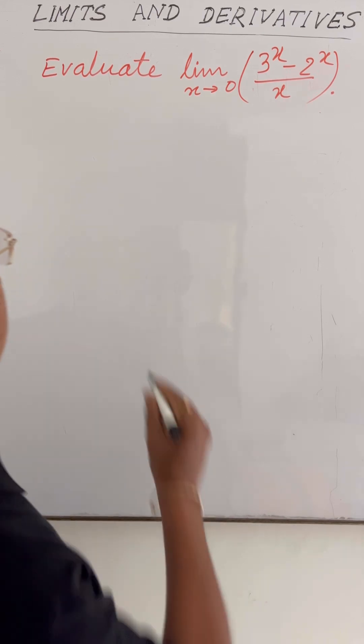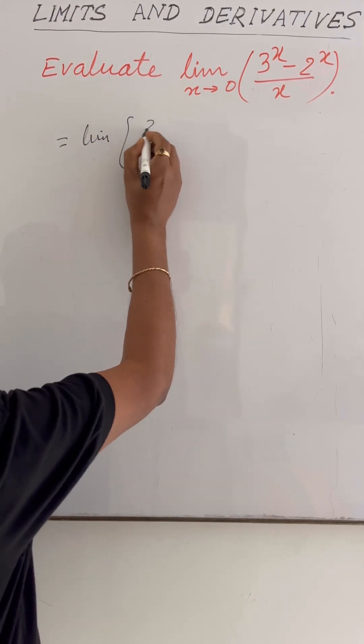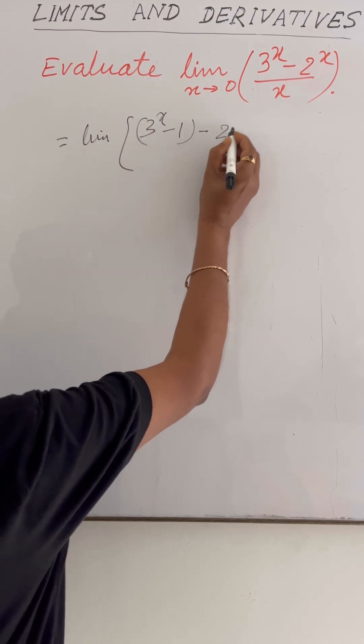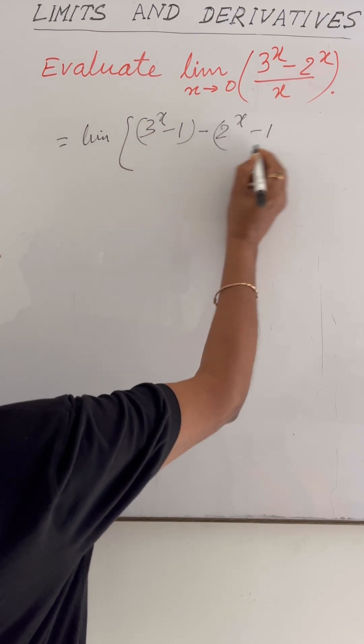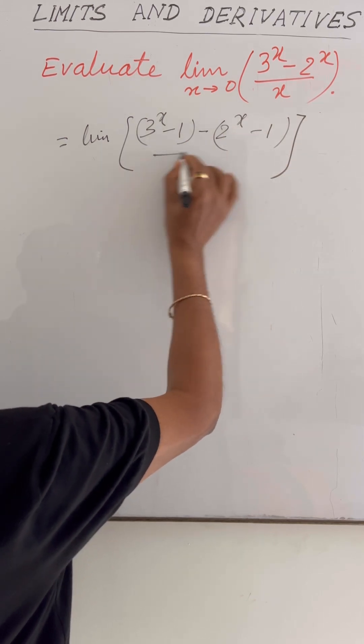So this can be written as limit of 3 to the power x minus 1 minus 2 to the power x minus 1, here minus 1 and plus 1 will be cancelled out, divided by x.